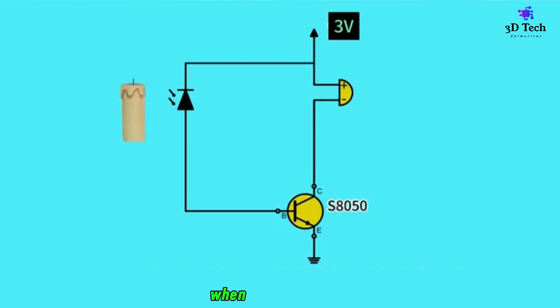Let's go back to the circuit. When there is no fire, the current generated by this infrared receiver is not enough and will not pass through the transistor, so the buzzer will not activate.